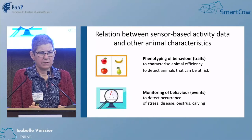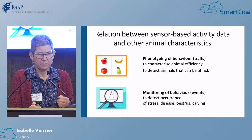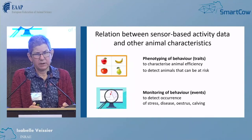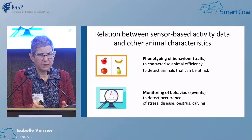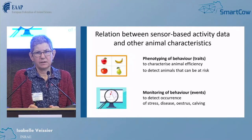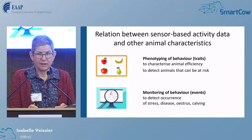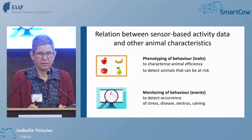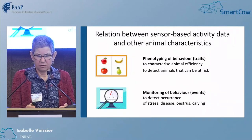We asked two main questions. The first was: can we identify stable traits? Can we phenotype the behavior of an animal, especially in relation to animal efficiency or sensitivity to disease? So we look at the animal for a certain period and try to predict what the animal will be like after that. We also investigated ways to monitor the behavior of animals and to detect events from this monitoring — detecting the occurrence of stress, disease, oestrus, or calving.